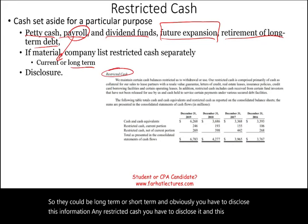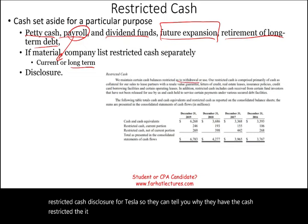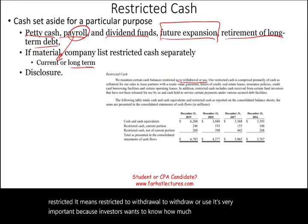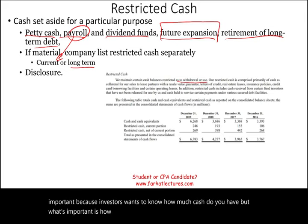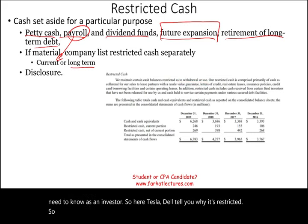Here is a restricted cash disclosure for Tesla — they explain why they have cash restricted, meaning restricted as to withdrawal or use. This is very important because investors want to know how much cash a company has, but more critically, how much of it is actually available to use. If certain cash is restricted, investors need to know that.